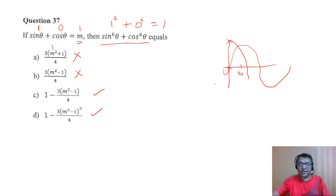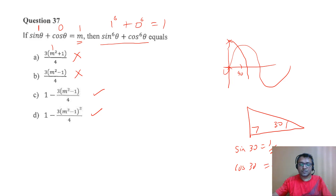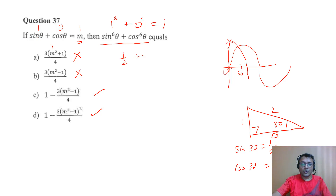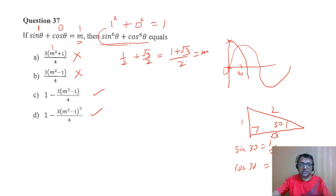Now I'll try another value. I know the 30-60-90 triangle from school: sin30° = 1/2 and cos30° = √3/2. Taking θ = 30°, m = sinθ + cosθ = 1/2 + √3/2 = (1 + √3)/2. Now for sin⁶θ + cos⁶θ, it will be (1/2)⁶ + (√3/2)⁶.